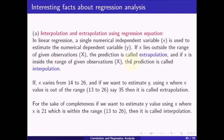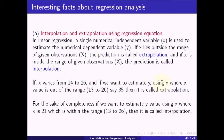If x varies from 14 to 26, and we want to estimate y using an x value outside that range — say less than 13 or more than 26, such as 35 — then it is called extrapolation. For completeness, if we want to estimate y using x equal to 21, which is within the range of 14 to 26, then it is called interpolation.